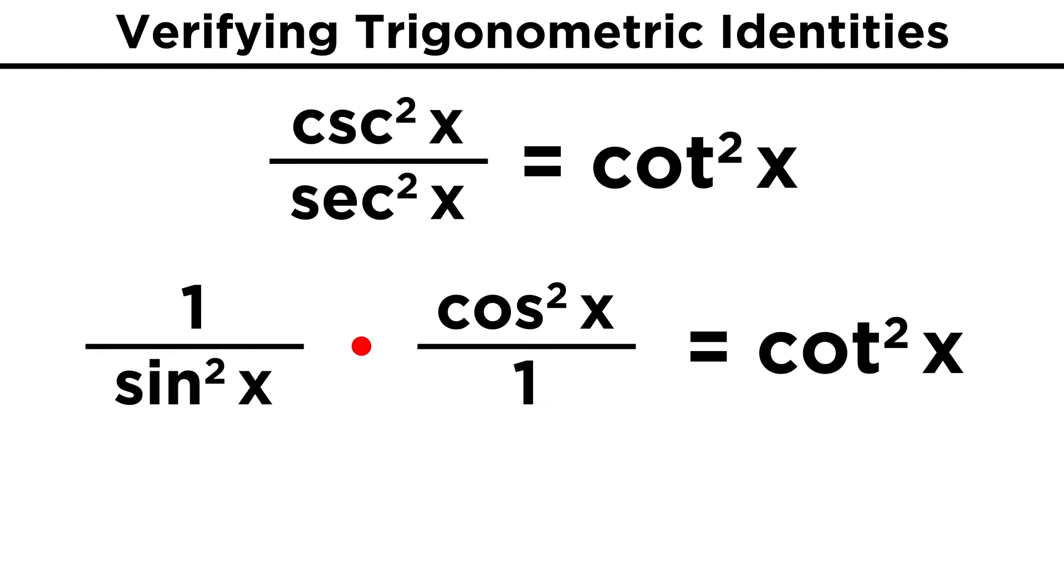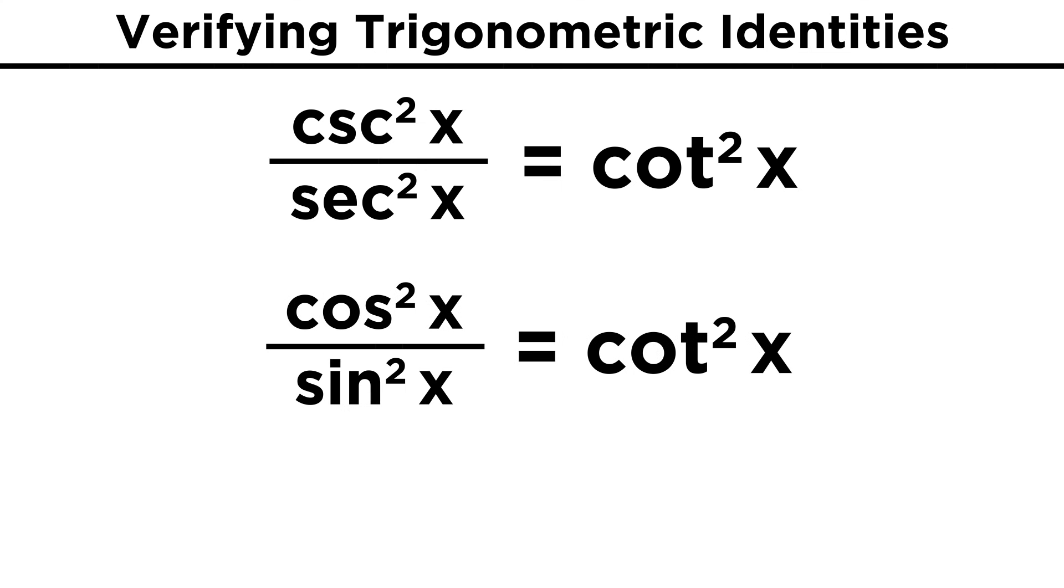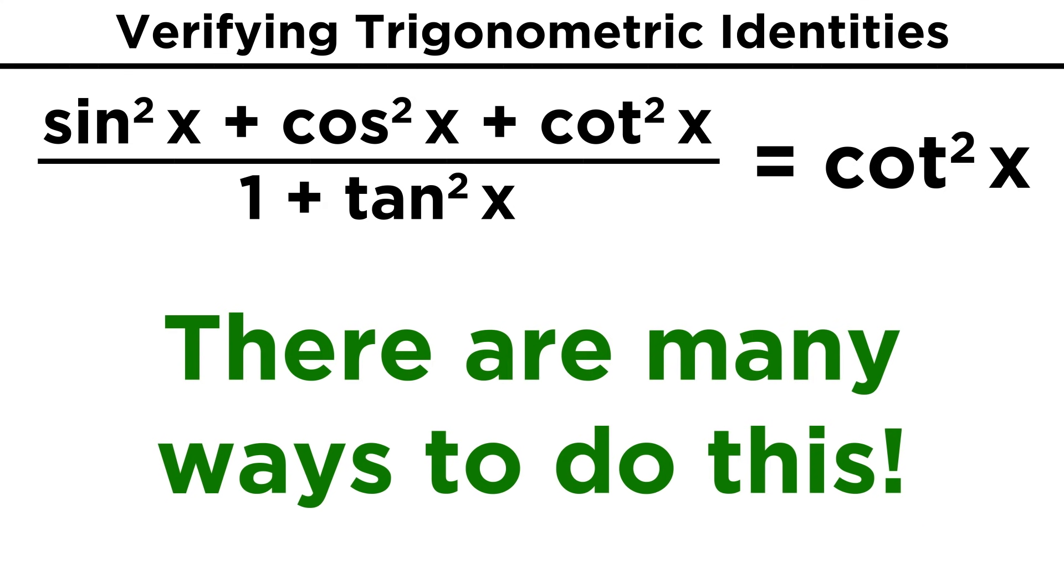That ends up as cosine squared over sine squared, which we know is equal to cotangent squared. Once again, there are many ways we could have done this problem, and as long as you just do things that are algebraically valid, you'll probably get there eventually.